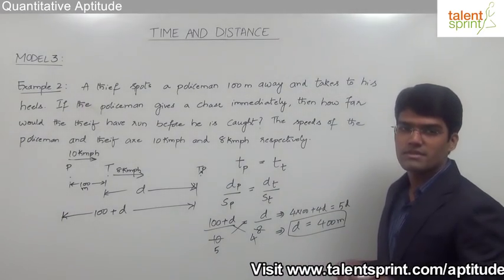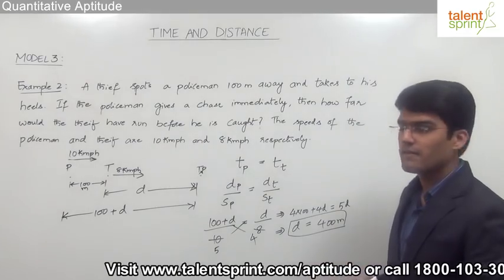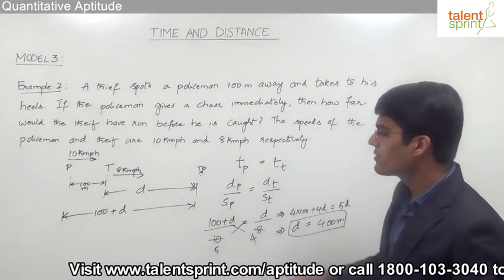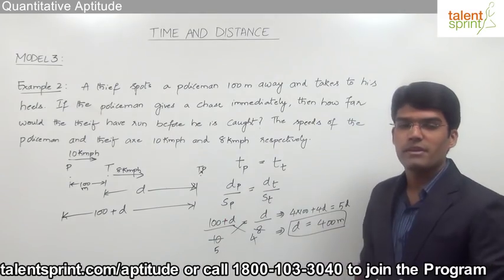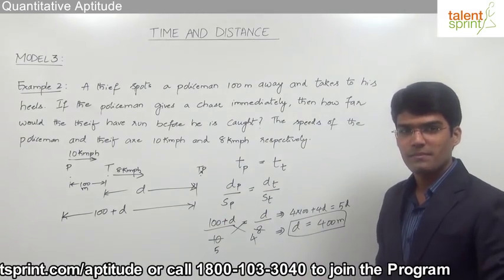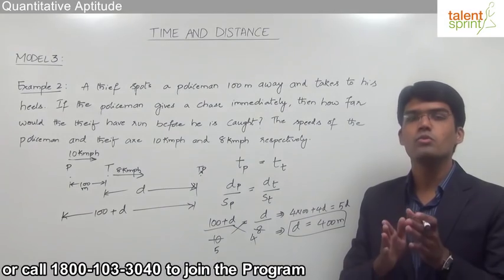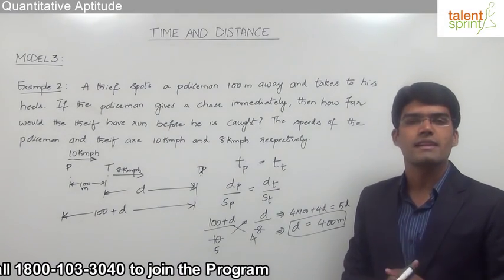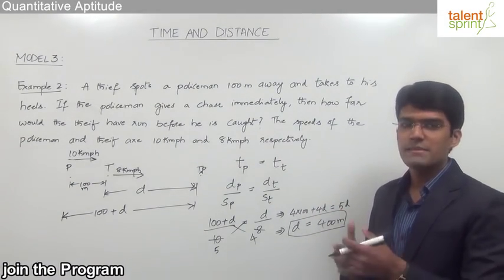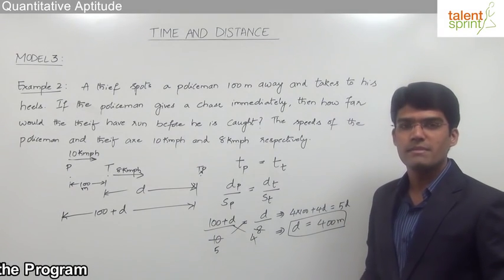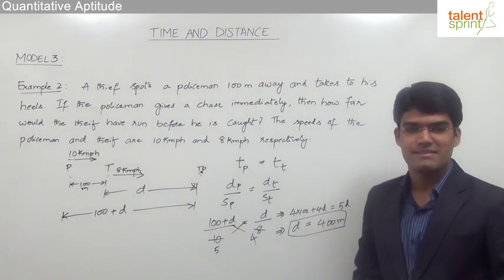If the question asks how far the policeman travels before catching the thief, the answer is 100 plus D, that is 100 plus 400, which is 500 meters. Remember: to solve questions where two bodies start at the same time and meet at a particular point, simply equate the time taken by each body to reach the meeting point and get the desired answer.